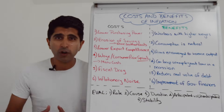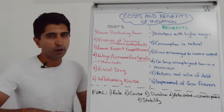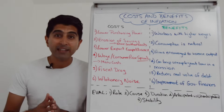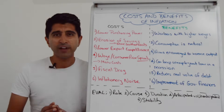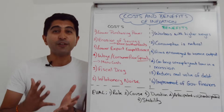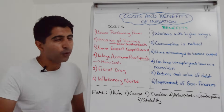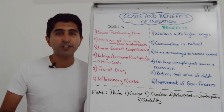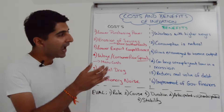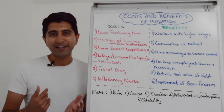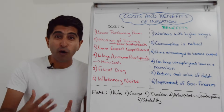We can also talk about shoe leather costs. When high inflation erodes the real value of savings, people spend time and effort searching for bank accounts offering higher interest rates — and there's an opportunity cost, as they could have been working and earning income instead. The name comes from the days before digital banking, when people would physically walk between banks searching for a better rate, eroding their shoe leather.